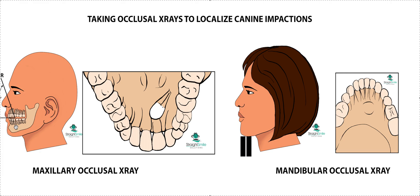Things you can see include sialoliths, tori, position of supernumerary teeth, position of roots or impacted teeth — things like that are really helpful. The maxillary one is also going to show you other impacted teeth, and you can see the sinus sometimes. There's a lot of great stuff, so I highly recommend it. It's a very versatile film. Anytime you see a tooth that looks weird, a supernumerary, or a possible impacted tooth, it's always a great idea to localize it so that you know what to expect.